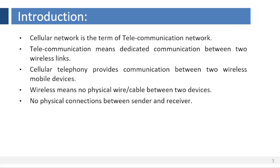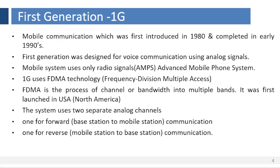It is a term of telecommunication network. Telecommunication means dedicated communication between two wireless links. Cellular telephony provides communication between two wireless mobile devices. Wireless means no physical wire between two devices — there is no physical connection between sender and receiver. We know that networks use radio waves and microwaves for communication.